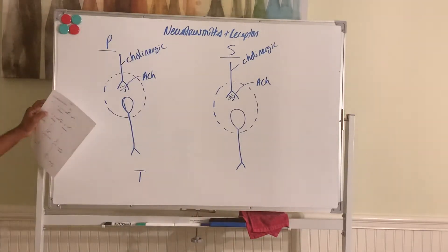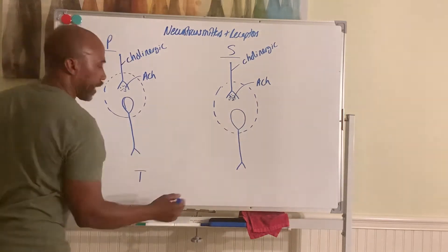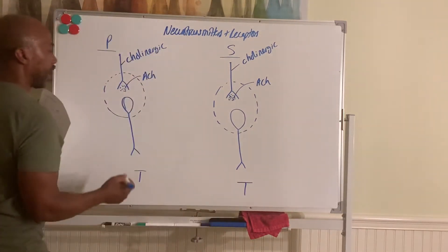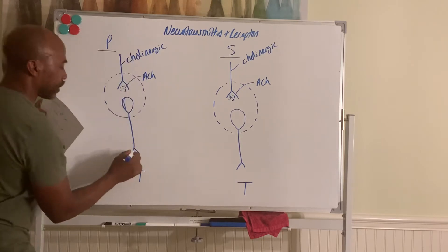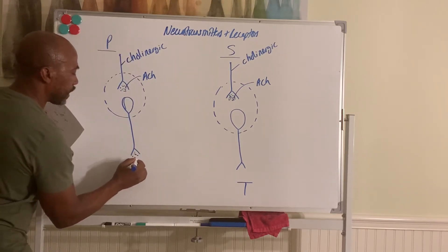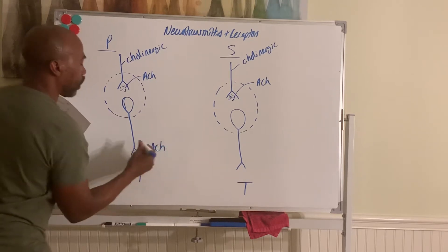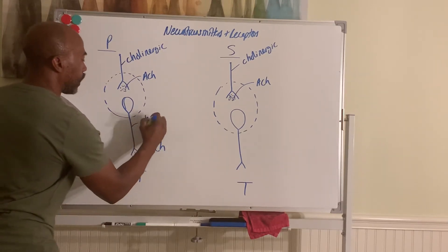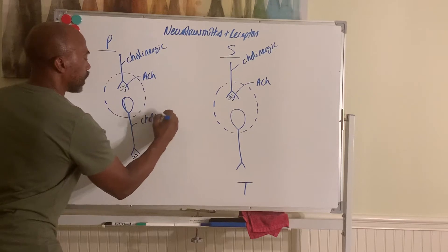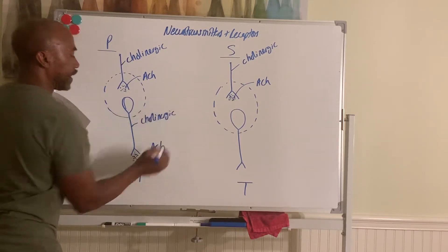And then the second neurons in the pathway, in the para division, again, they release ACH, acetylcholine. And so again, these are also cholinergic neurons. Neurons that release ACH.